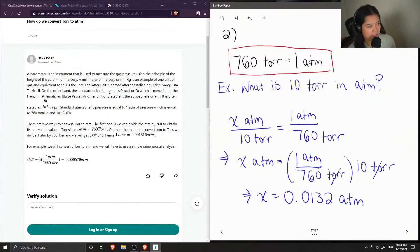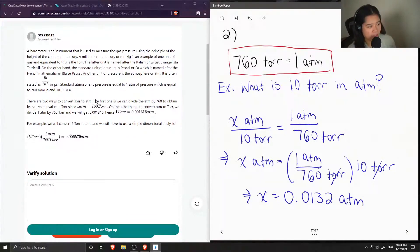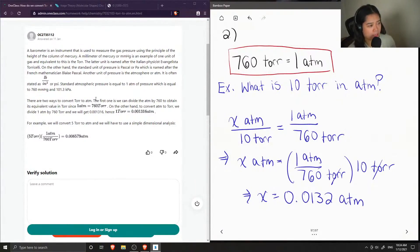On the other hand, the standard unit of pressure is Pascal, or PA, which is named after the French mathematician Blaise Pascal. Another unit of pressure is the atmosphere, or ATM. It is often stated as pounds per inch squared, or PSI. Standard atmospheric pressure is equal to 1 ATM of pressure, which is equal to 760 millimeters of mercury and 101.3 kilopascals.